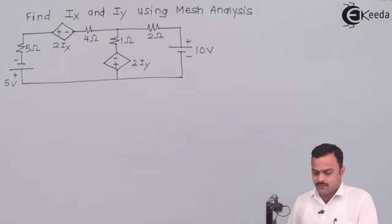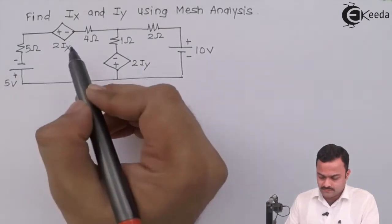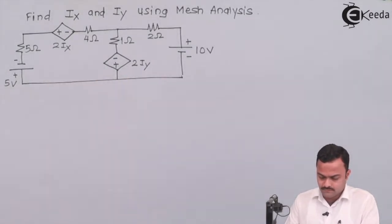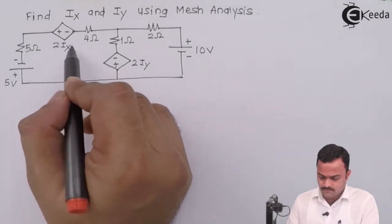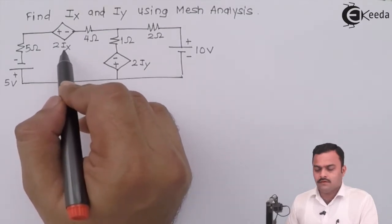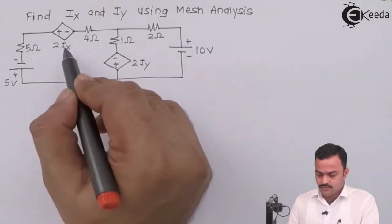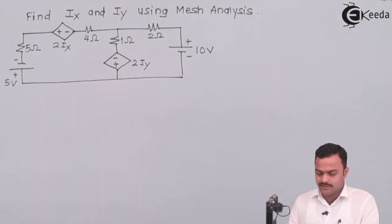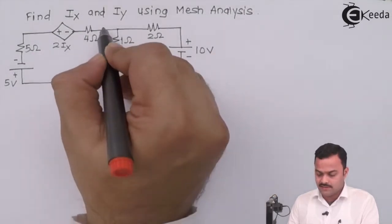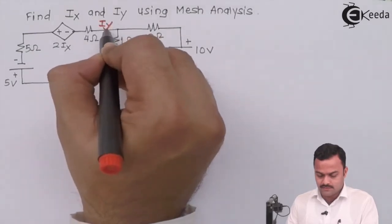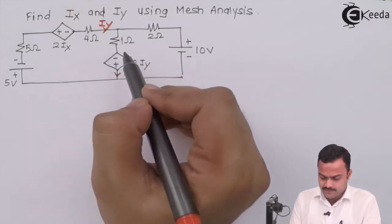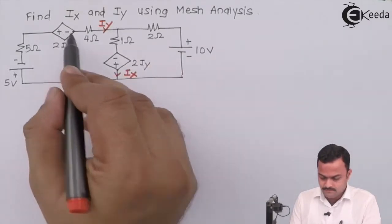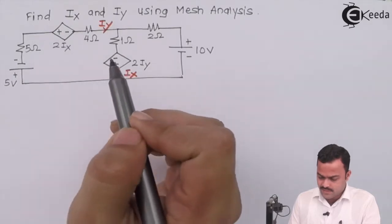The problem is to find mesh currents i1, i2, and i3. There are two dependent voltage sources which depend on currents ix and iy. Let's mark where ix and iy are: ix is this marked current and iy is this branch current.